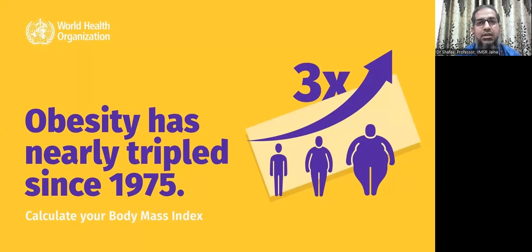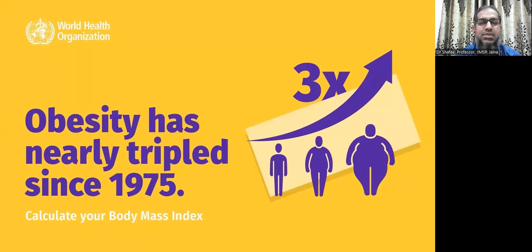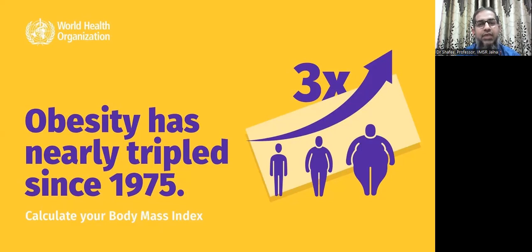You can calculate the body mass index, which is how obesity is measured. The formula is weight in kilograms divided by height in meters squared. Put in the values and calculate your body mass index. If your body mass index is about 25, it means you are overweight, and if it is more than 30, it means you are having obesity.